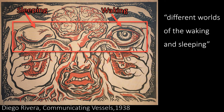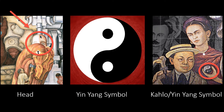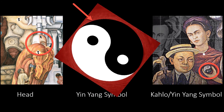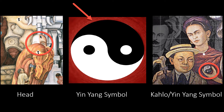Right — in the Communicating Vessels print, we have two eyes on top of the glasses. One eye is closed and the other eye is open. Let's look at that head again. One side of the face is white and the other side is darker. The colors are similar to the yin-yang symbol. If we rotate the yin-yang symbol, we can see the similarities between the head and the yin-yang symbol more easily. In the white section, we have a black dot that could represent an eye closed, and in the black section, we have a white dot that could represent an eye opened.